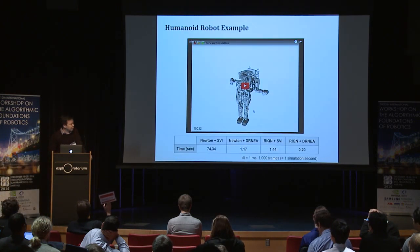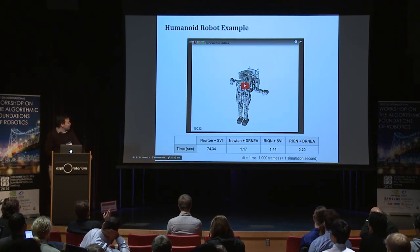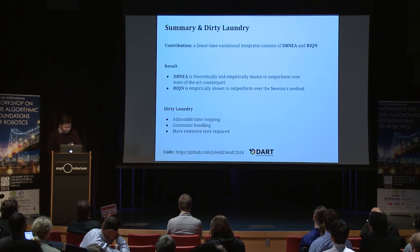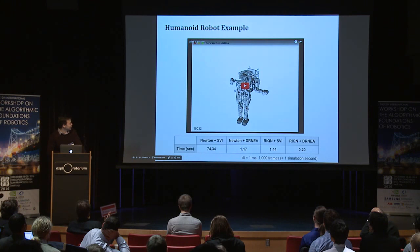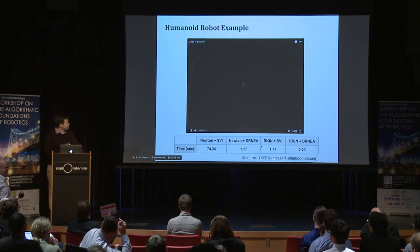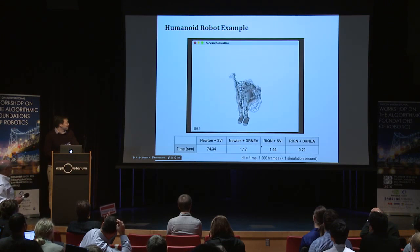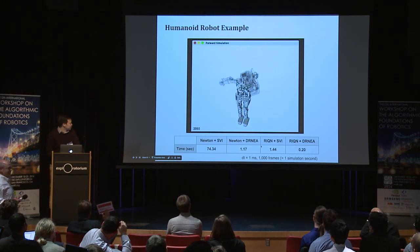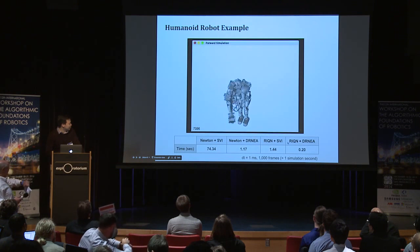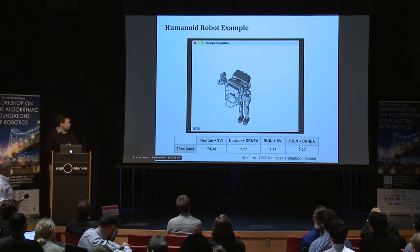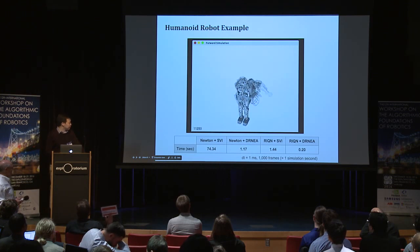This is a useful example — I'll warn you that I just ran passive simulation, so the result doesn't look that impressive. This is the Atlas robot. You can see that only our method can simulate this robot in real time — five times faster — while other methods cannot achieve real-time results.